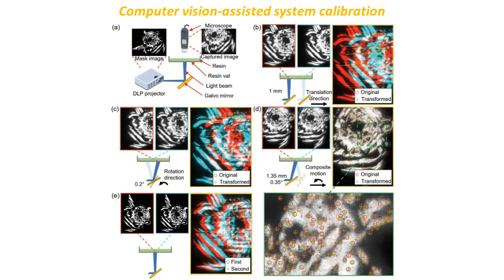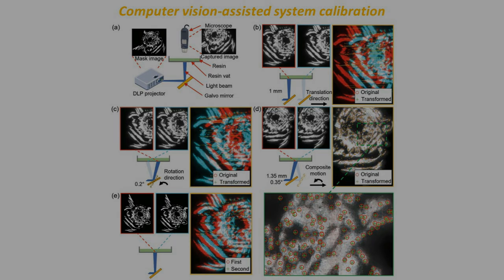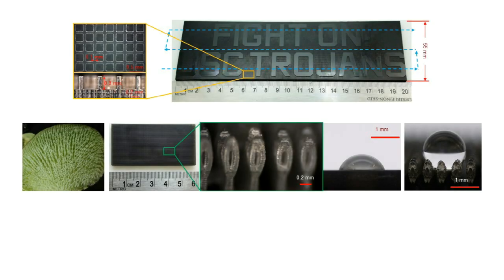The researchers utilized computer vision methods to synchronize the two different movements such that no misalignment happened during printing. With Hopping Light, the researchers successfully fabricated 200-millimeter-sized parts with a high resolution of 10 micrometers per pixel.